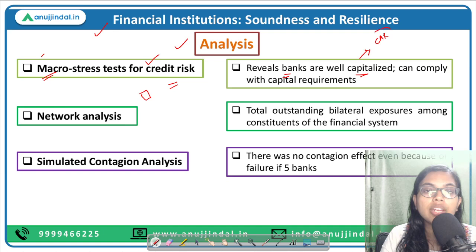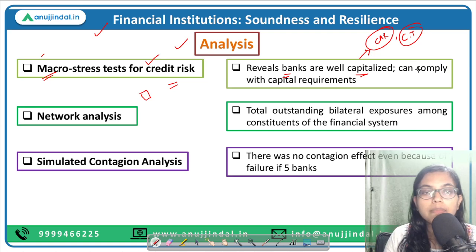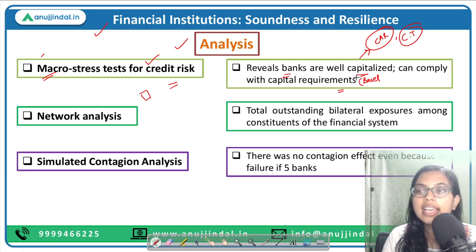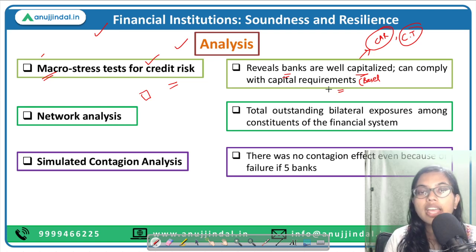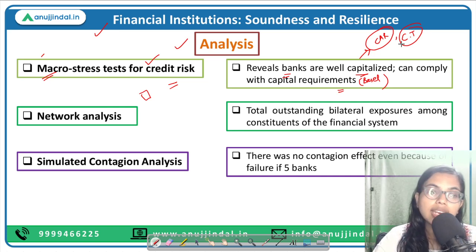All banks would be able to comply with the minimum capital requirements as per Basel 3 or RBI's guidelines even under adverse stress scenarios. The stress scenarios may happen, but banks don't need to worry because they have a sufficient amount of reserves. Now we will be talking about the Network Analysis.